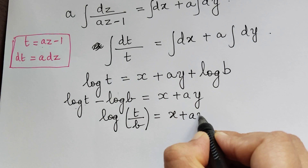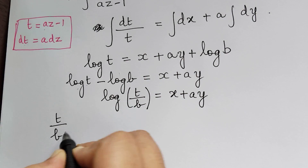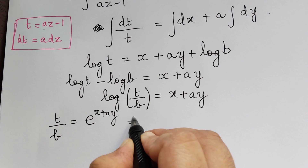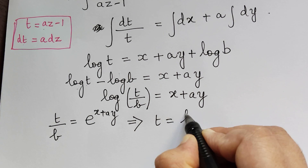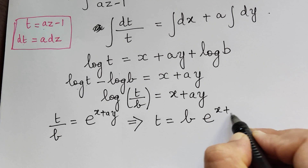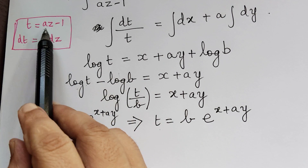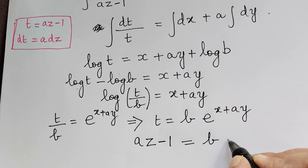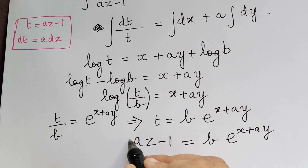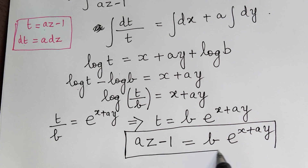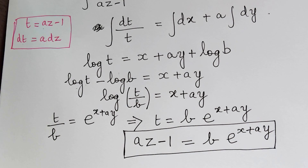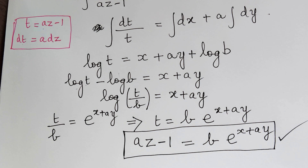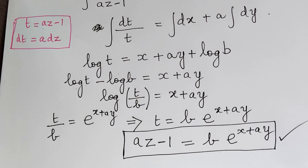From log(t/b) = x + ay, we get t/b = e^(x + ay), so t = b · e^(x + ay). Since we substituted t = az − 1, the required solution is: az − 1 = b · e^(x + ay). This is the solution to the given nonlinear PDE of type f(p, q, z) = 0. Please follow the next video lecture for Problem 4. Thank you.